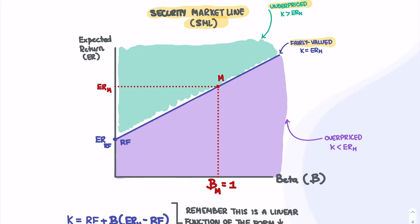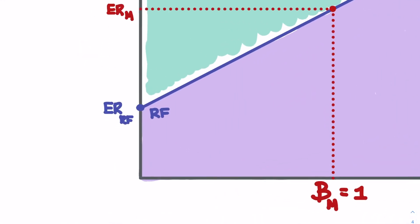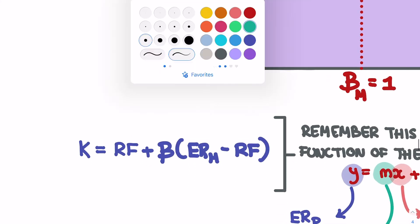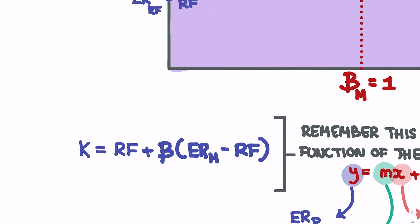But what I want us to be able to understand is how does this relate to our function or our line, and how could we empower ourselves with our graph to figure out what's actually happening? Okay, so with that being said, the first thing that I want for us to be very comfortable with is this idea of our function of the SML.